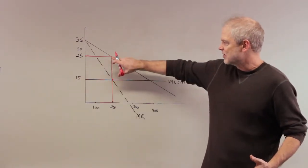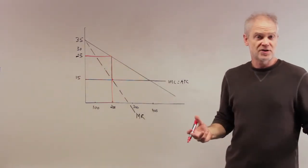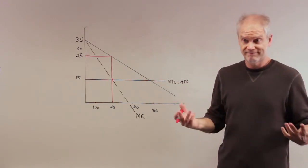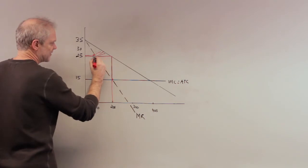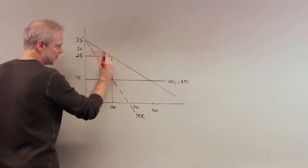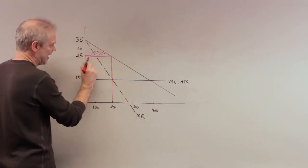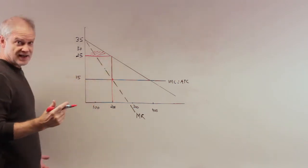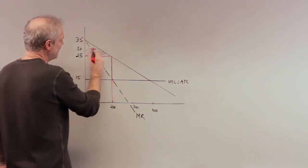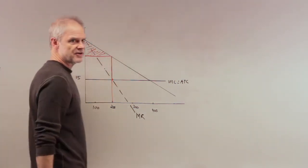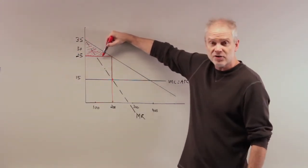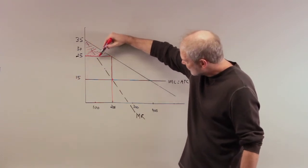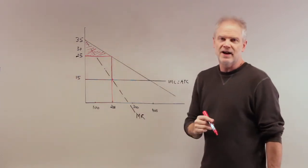So if the monopolist can't price discriminate, that's where it's going to maximize its profits: MC equals MR, up to the demand curve, this price. The question is what's consumer surplus? This area represents the difference between people's willingness to pay and the price they actually had to pay. These buyers value this good at a price higher than 25.